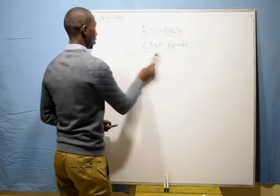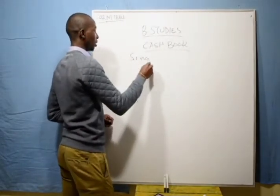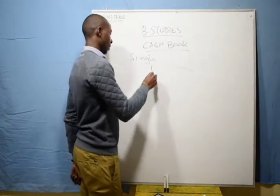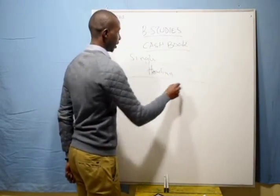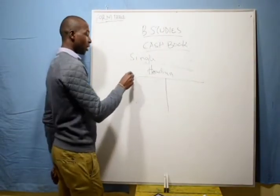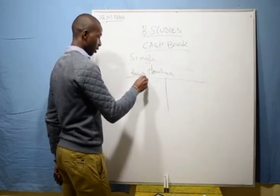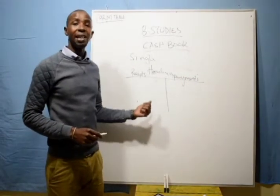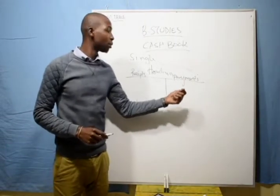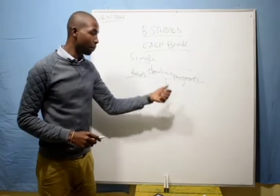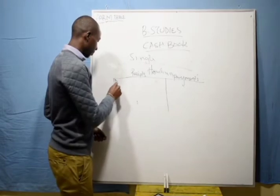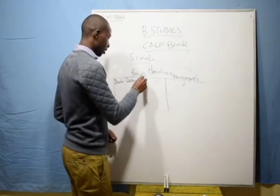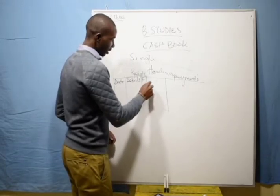Let's go into the preparations of the cash book. We will start with the single column cash book. In a single column cash book, you must have a heading. After the heading, you are going to have two sides: this side is called Receipts, and this side is called Payments. On the receipts side, you record all the monies received by the business. On the payment side, you record all the monies paid by the business. You have: Date, Details, Folio, then Amount.